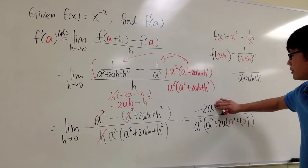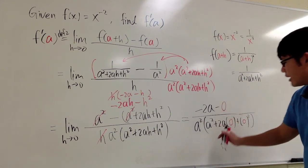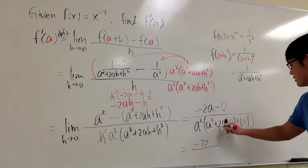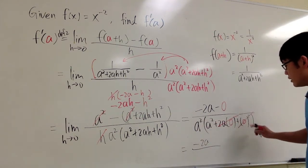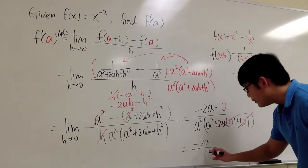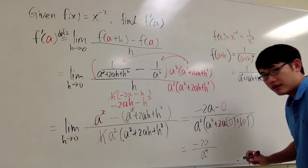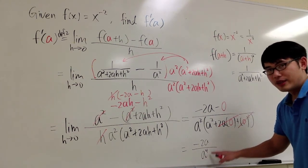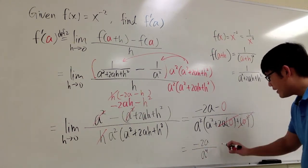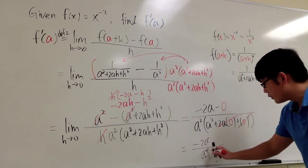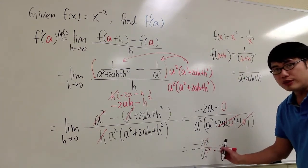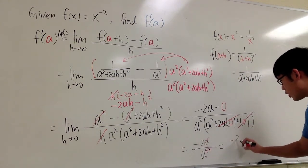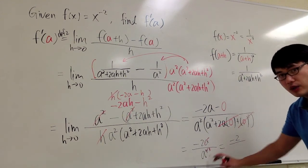What we get is: on the top it's just negative 2a, and on the bottom we have a squared times a squared, which gives us a to the fourth power. We can then cancel one factor of a from the numerator with one from the denominator, leaving a to the third power on the bottom. The final answer is negative 2 over a to the third power.